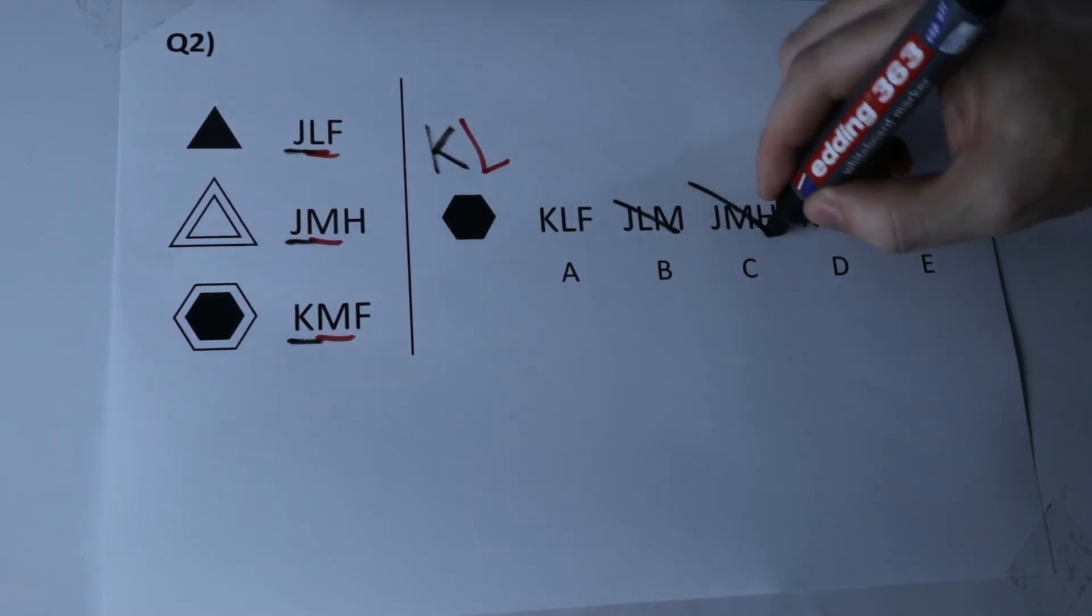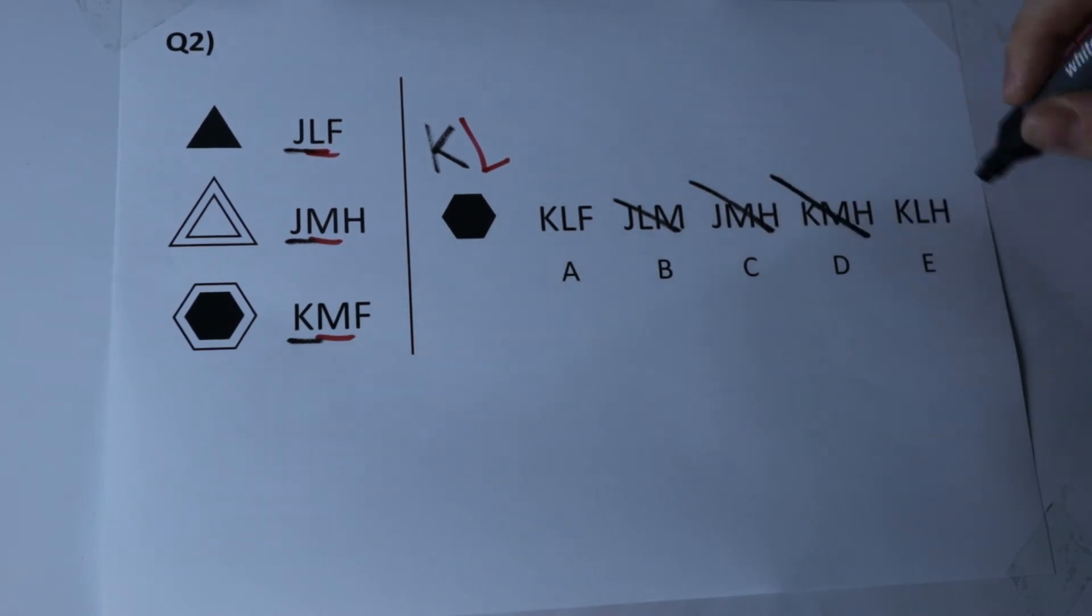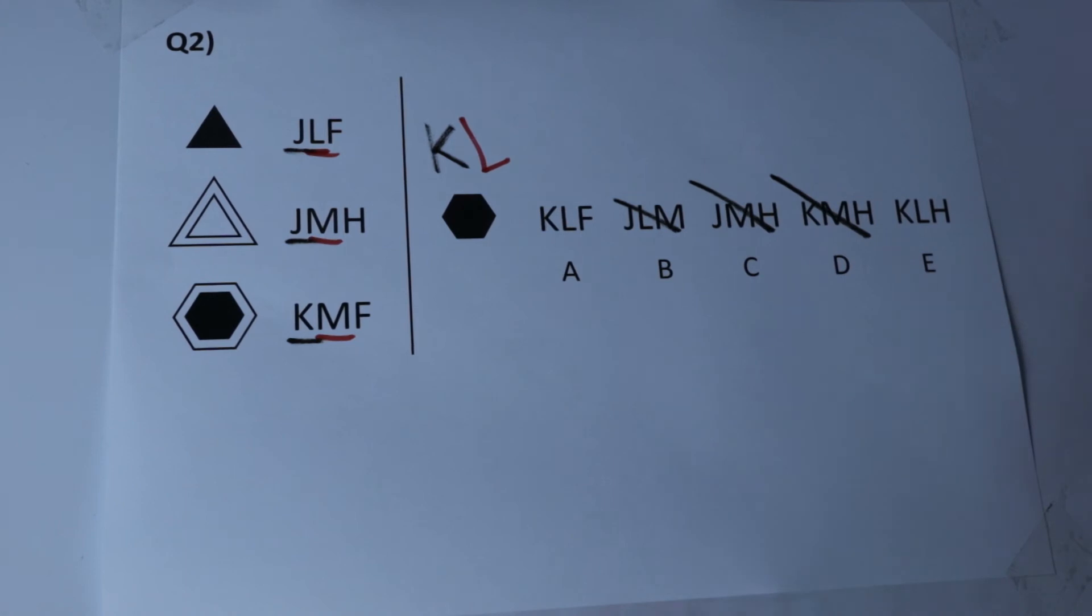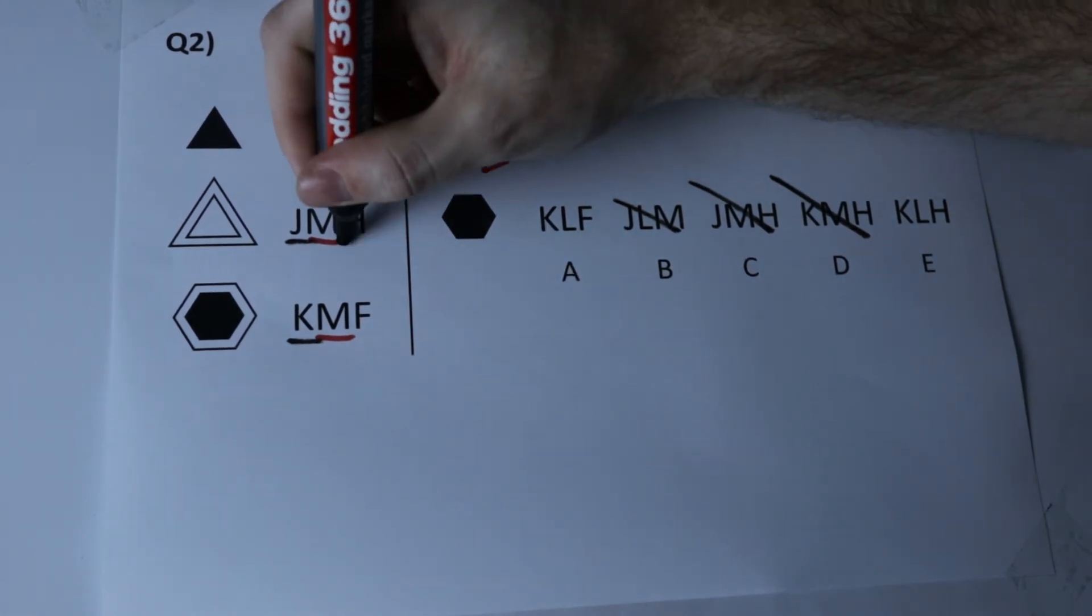It can't start with a J, so I'm going to get rid of these two. It can't be KM because I know it's KL and that leaves just A and E. So if I go over to the left hand side and isolate the final letter, F and H and F, ask ourselves the same question.